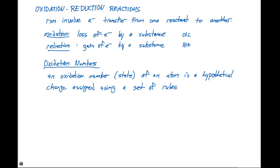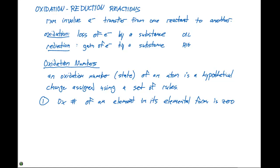Rule number one: the oxidation number of an element in its elemental form is zero. Examples of these are H₂, O₂, P₄, iron, and gold. In each of these cases — hydrogen, oxygen, phosphorus, iron, and gold — their oxidation number is going to be zero.